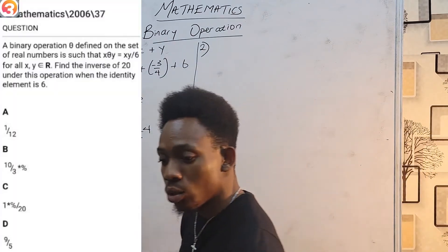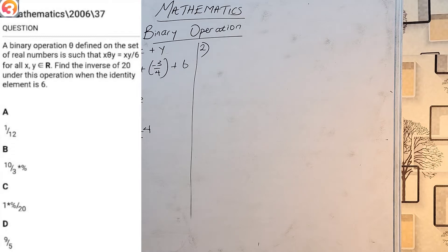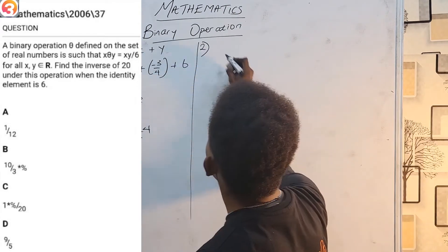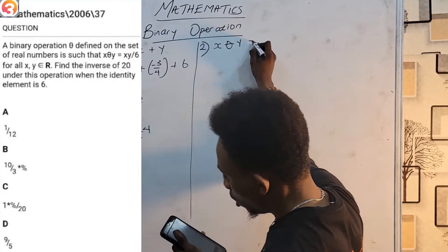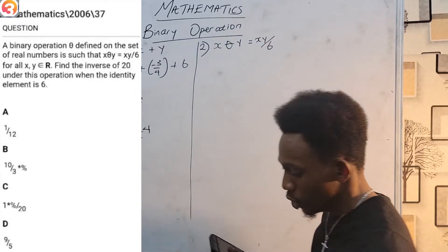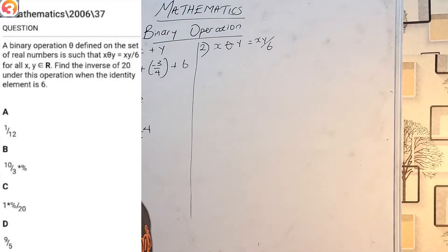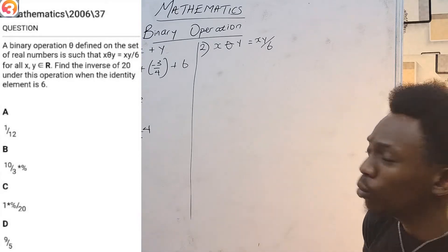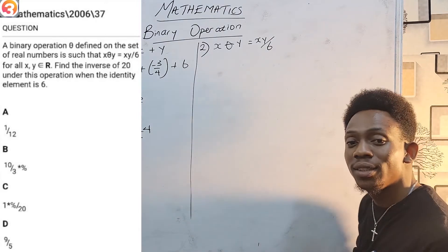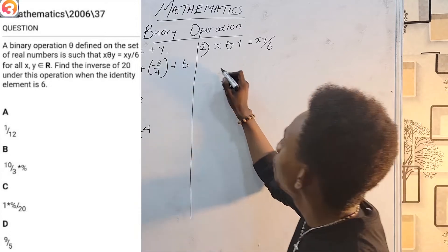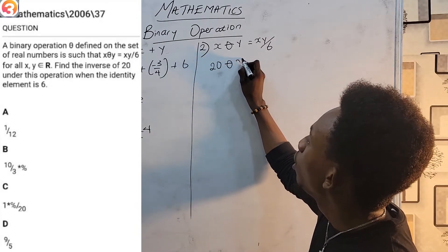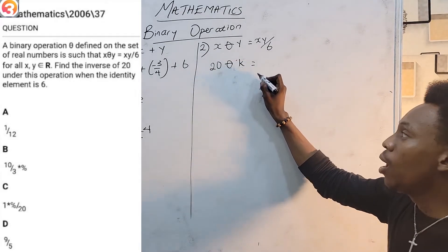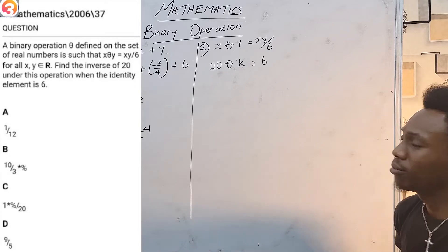Question 37 from 2006 says: a binary operation theta defined on the set of real numbers is such that x★y = xy/6 for all x, y elements of ℝ. Find the inverse of 20 under this operation when the identity element is 6. To get the inverse, we know that when the element operates on its inverse it gives the identity. So 20★k = 6, and using the formula that gives 20k/6 = 6.